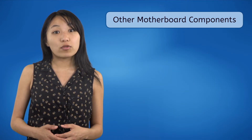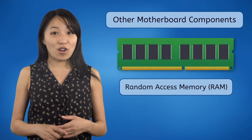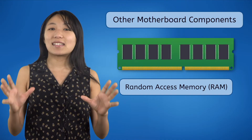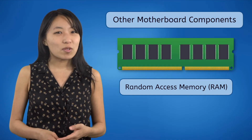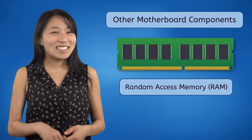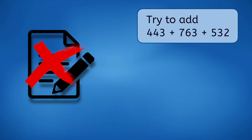Laptops at least have enough room to upgrade one thing: the short-term memory component known as random access memory, or RAM for short. To help you understand what RAM does, let's do a little activity. Try to add the numbers 443, 763, and 532 together in your head — no writing it down, no using a calculator, just in your own head. Pause and do that now.